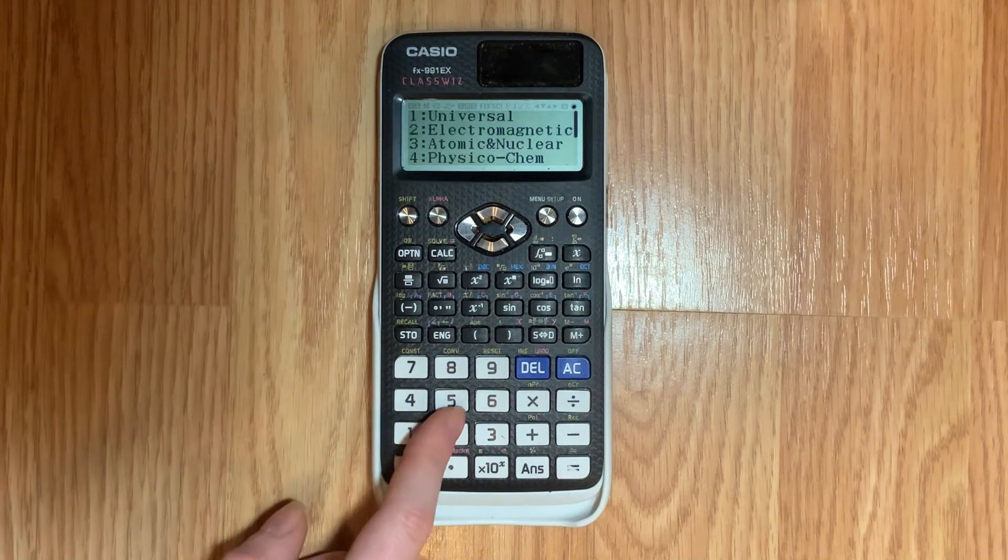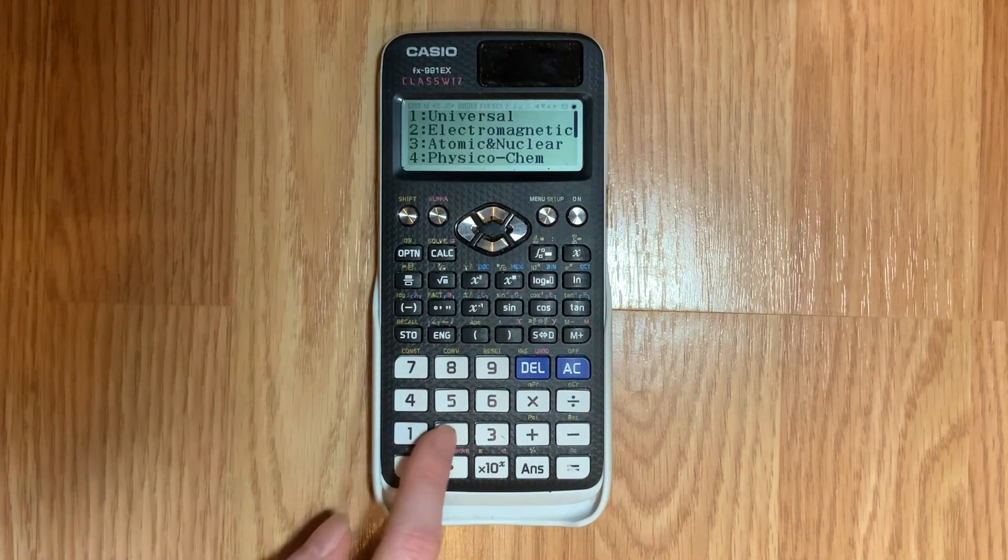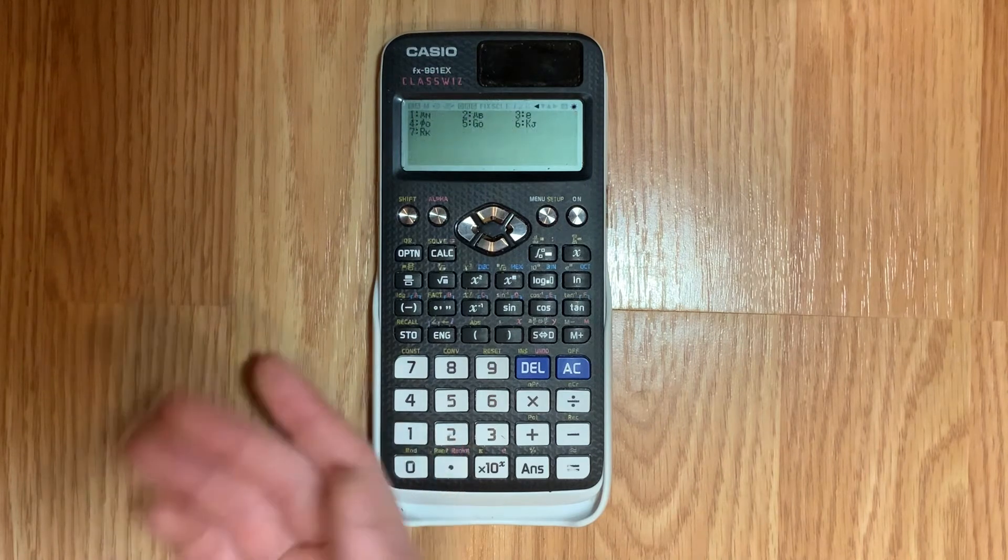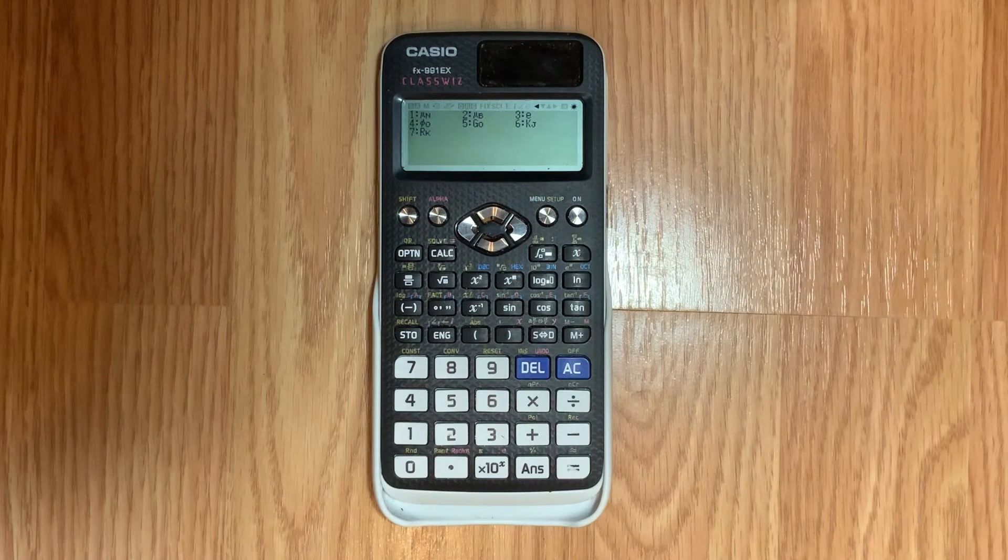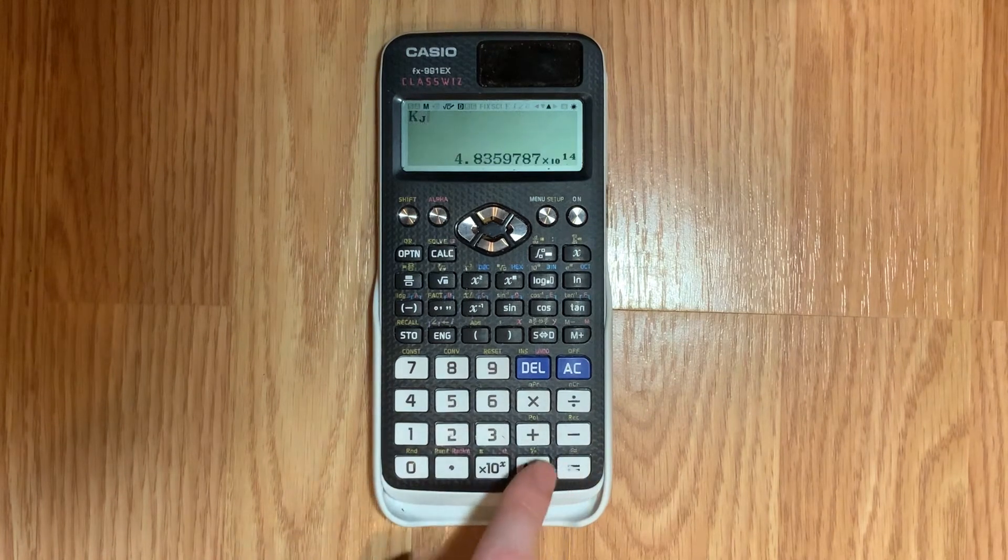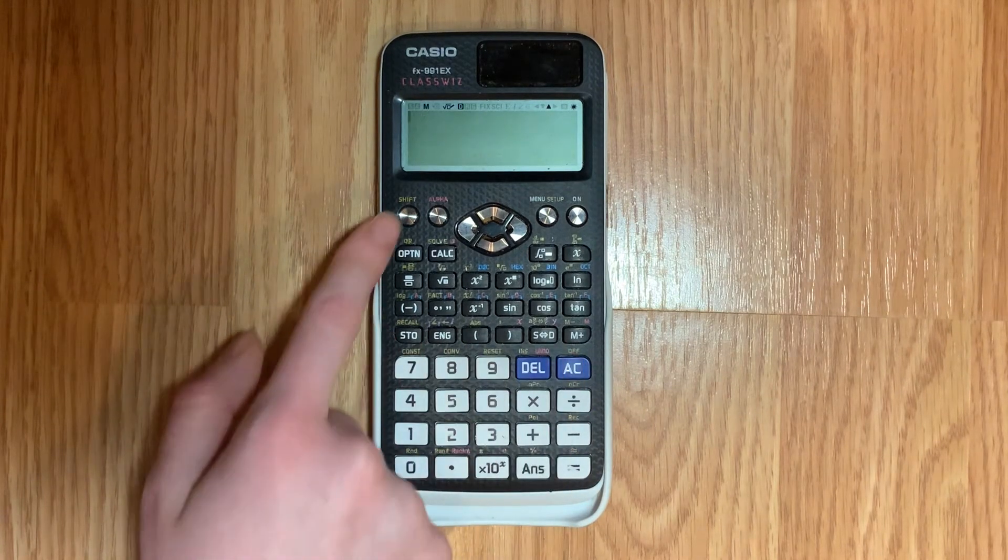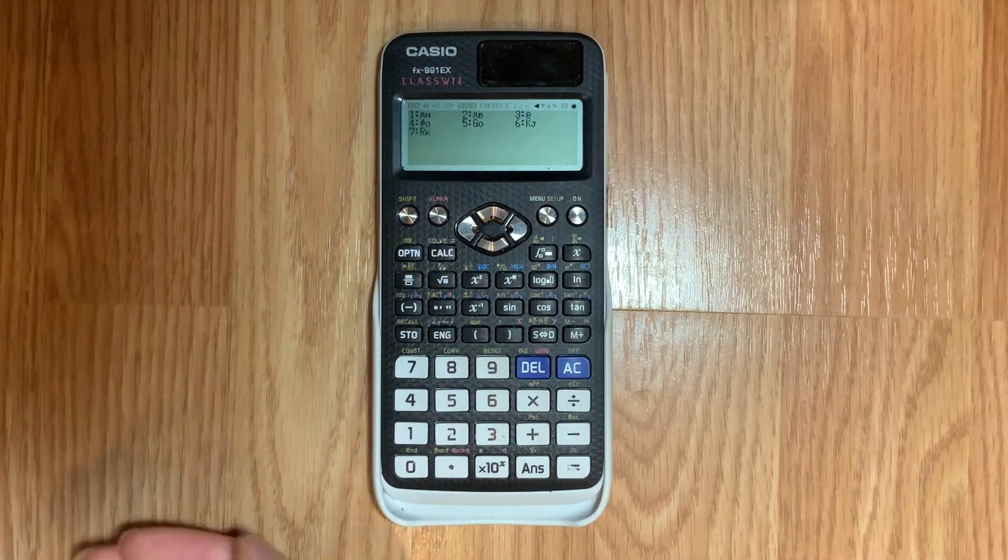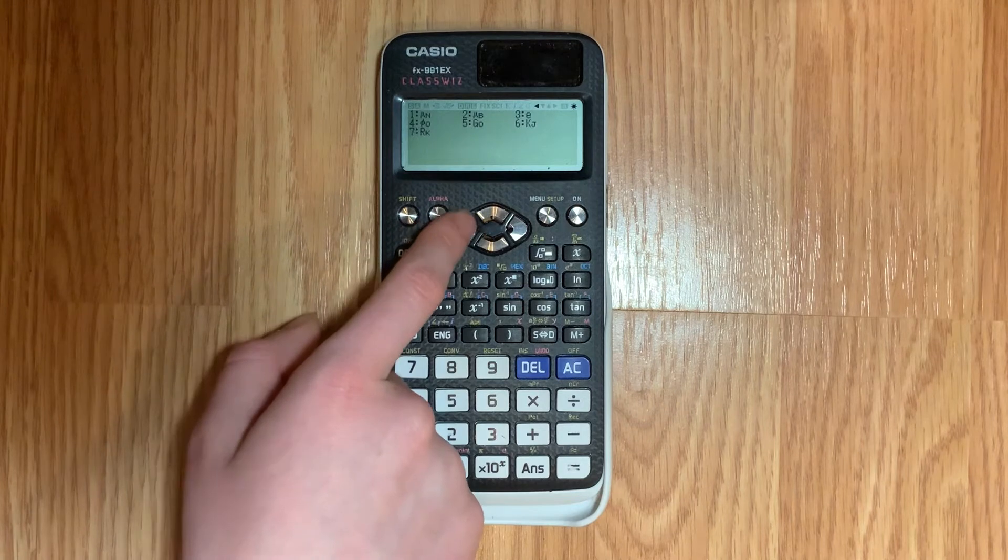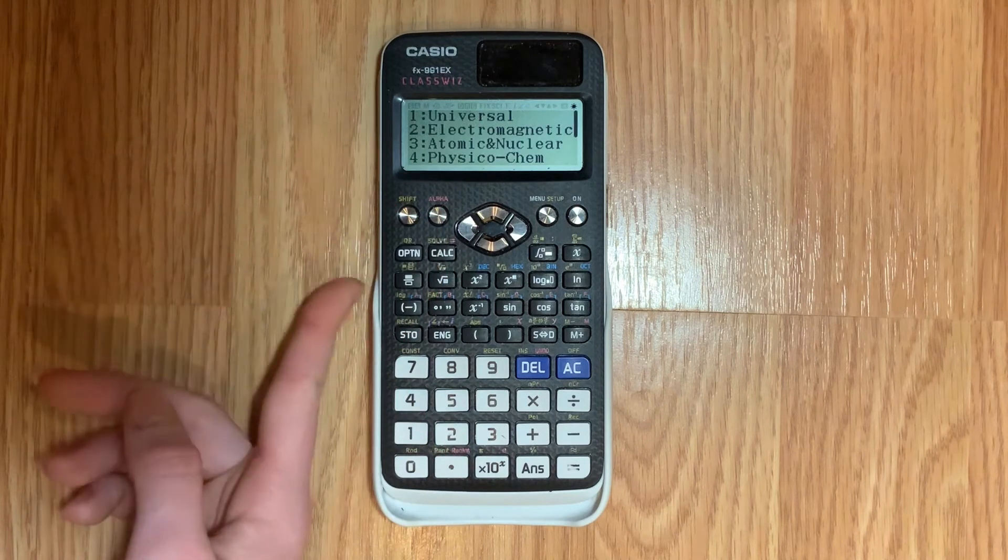Next you have electromagnetic so to access that you'll push number two and here are some constants that it has. Honestly I don't think I recognize any of these but if you do good for you that's how you find them. And if you accidentally hit the wrong category you can just push the left arrow here and it'll take you back to the menu.